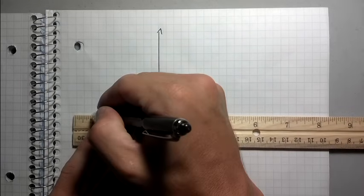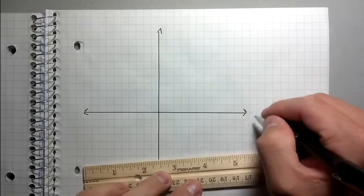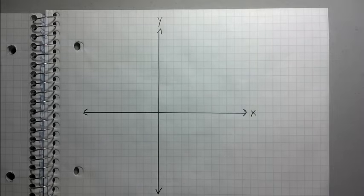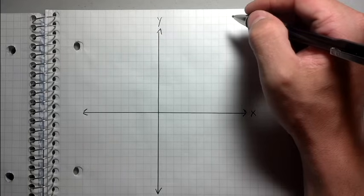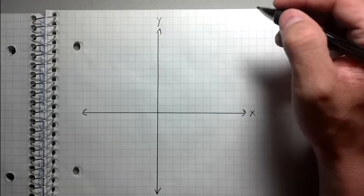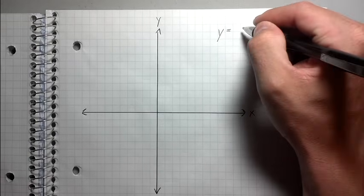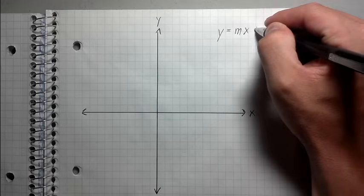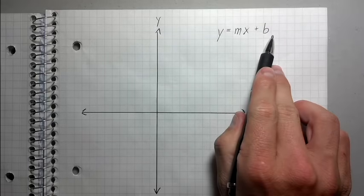Here we go. We have our x-axis right here, and we have our y-axis right here. The first thing you want to know about graphing a line is that there's a certain form of a linear equation which is very helpful to do so, and that is slope-intercept form. The way you write that is y equals mx plus b. This is called slope-intercept form.